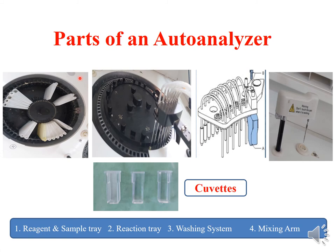The reagent arm will dispense reagent into the cuvette and the sample arm will dispense sample into the cuvette, and the reaction will occur. This is the washing station — the schematic diagram of the washing system or laundry system, which will wash all the cuvettes whenever testing is over.